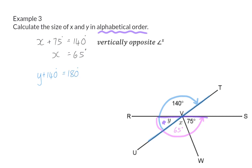And again, we need to supply a reason, and in this case it will be angles on a straight line. So in this case 180 minus 140 means that y is 40 degrees.